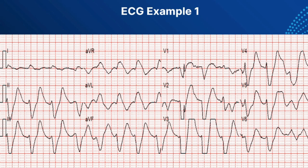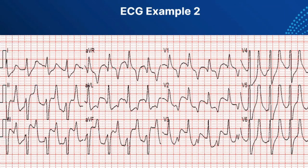ECG Case 2 shows how hyper-K mimics a STEMI. You can see peaked T-waves in some of the precordial leads, but for the most part it looks like an inferior STEMI — leads II, III, and aVF are elevated while lead I and aVL are depressed. But when you think the words 'wide and bizarre,' think hyperkalemia. This doesn't look like your normal STEMI — you can see where the T-wave was peaked and peaked and peaked.